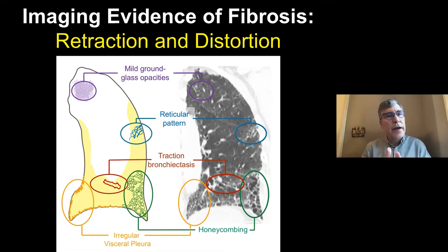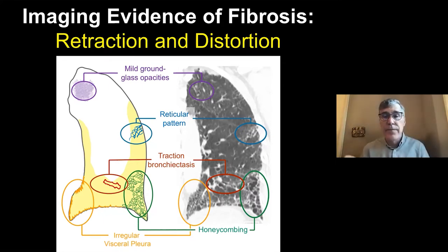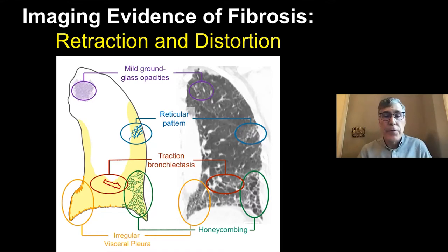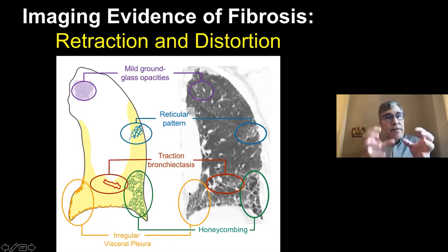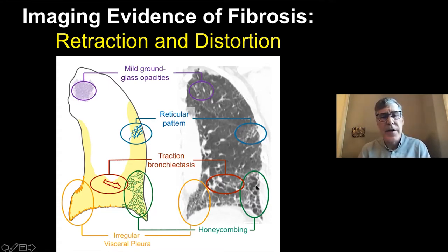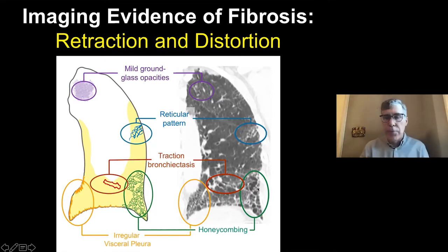Nothing is wrong with the airway itself — it just lives in a bad neighborhood, secondary to that retraction. Irregular visceral pleura is very helpful: the pleura should be nice and smooth, but when it looks spiculated, that's a sign of retraction. Last is honeycombing — one of the most important and very difficult findings. These are small cysts right up against the pleura.